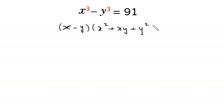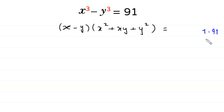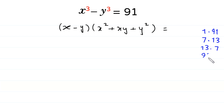This equals 91, and 91 can be factorized as 1 times 91, 7 times 13, 13 times 7, and 91 times 1.